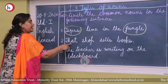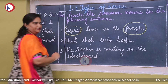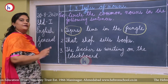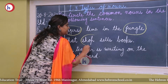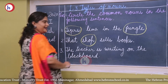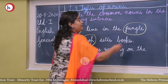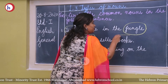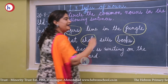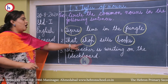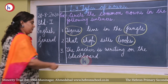Number two — 'That shop sells books.' Number one common noun is 'shop' — shop is the name of a place. And the other one is 'books' — name of things. So shop and books are common nouns.